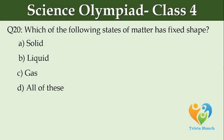Which of the following states of matter has a fixed shape? Option A: solid. Option B: liquid. Option C: gas. Option D: all of these.